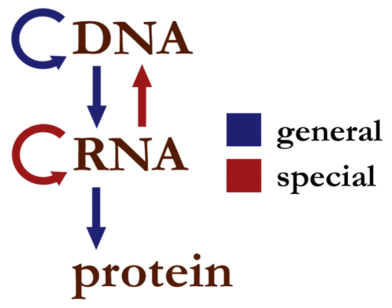Transcription is the process by which the information contained in a section of DNA is replicated in the form of a newly assembled piece of messenger RNA. Enzymes facilitating the process include RNA polymerase and transcription factors. In eukaryotic cells the primary transcript is pre-mRNA, which must be processed for translation to proceed. Processing includes the addition of a 5' cap and a poly-A tail to the pre-mRNA chain, followed by splicing. Alternative splicing occurs when appropriate, increasing the diversity of the proteins that any single mRNA can produce. The product of the entire transcription process is a mature mRNA chain.